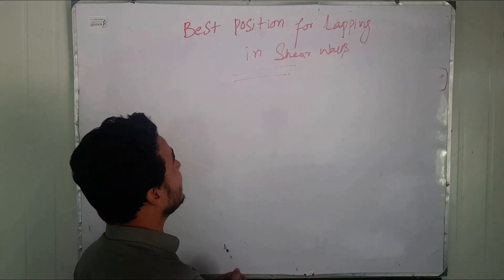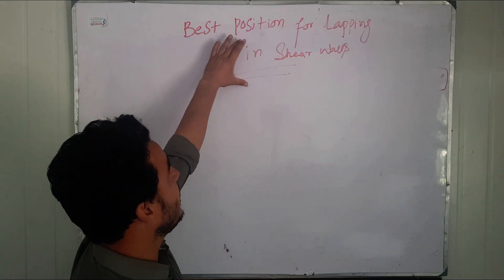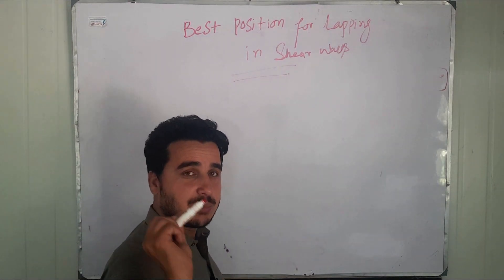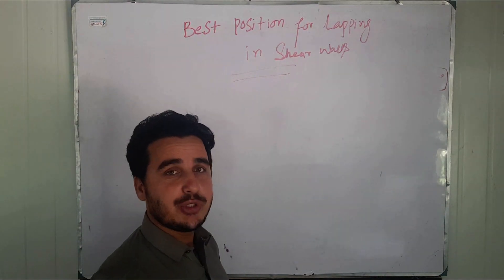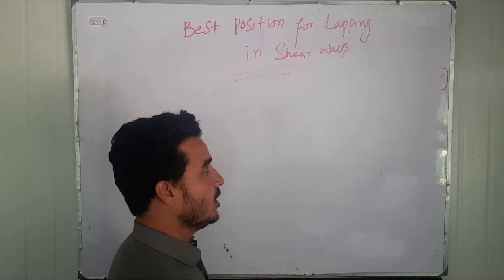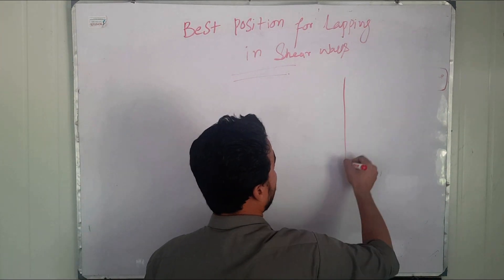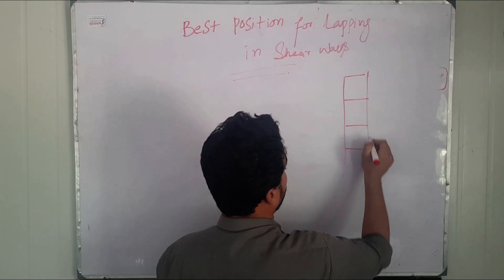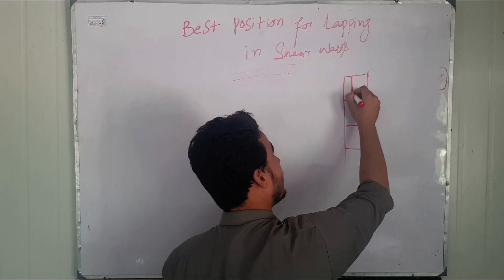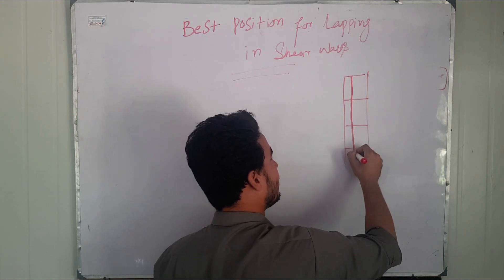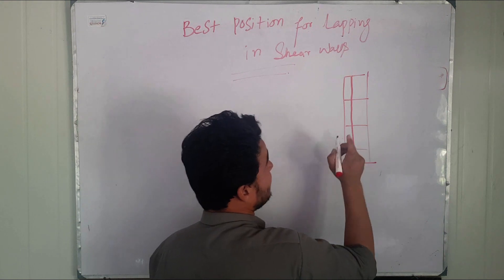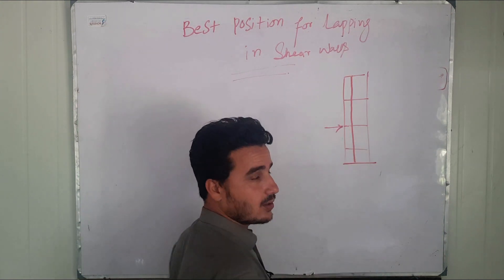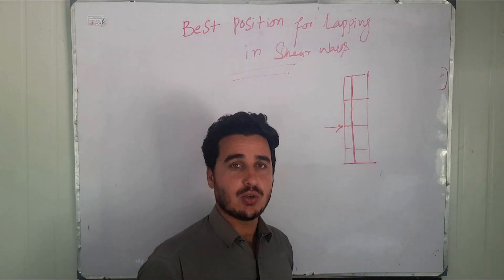Today's topic is the best position for lapping in shear walls. First, you should know the purpose of a shear wall — why do we use shear walls in a structure? Whenever you are going for high-rise buildings with multiple stories, we provide a shear wall. The purpose of this wall is to resist loads from the lateral direction.